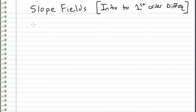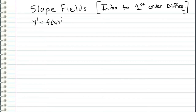I'd like to introduce first order differential equations with slope fields. Slope fields are a graphical way of producing a solution to a first order differential equation. The general form of a first order differential equation can be written as y prime is equal to a function of x and y. When we solve this equation, what we're solving for is the unknown function y.